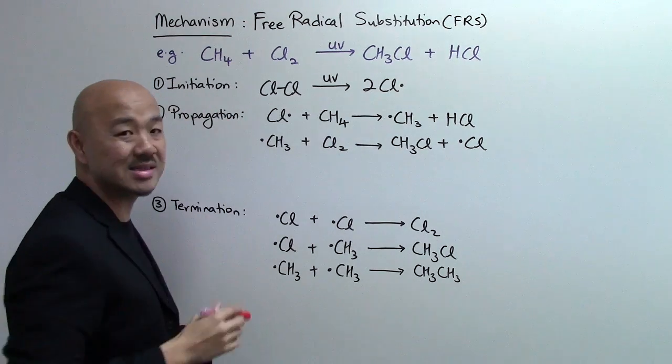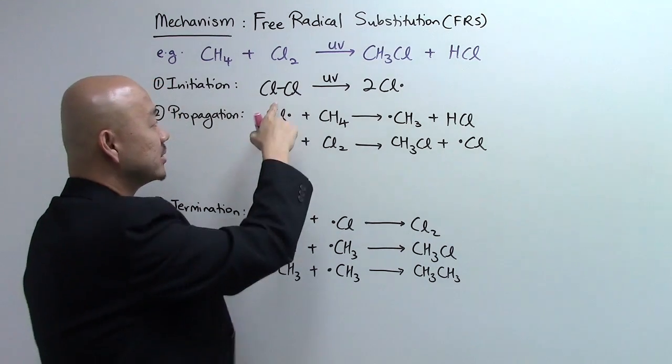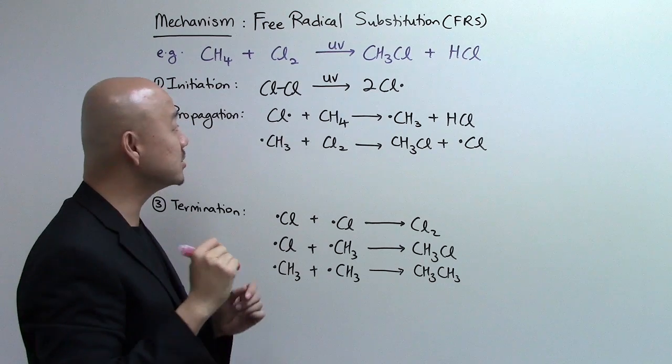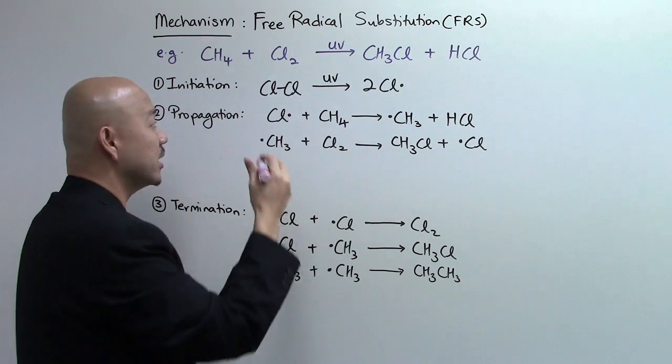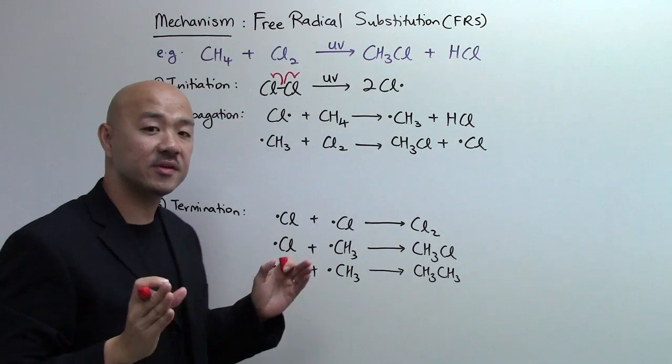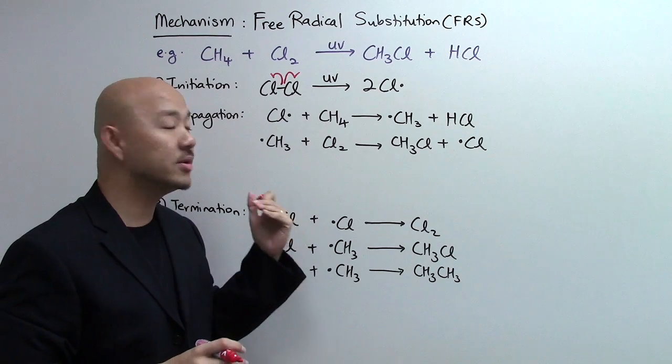In the first step, the initiation, the UV light will provide enough energy to break this Cl-Cl bond, the chlorine bond inside here. And this is what we call homolytic fission. And this gives you two chlorine radicals. These radicals are very reactive.